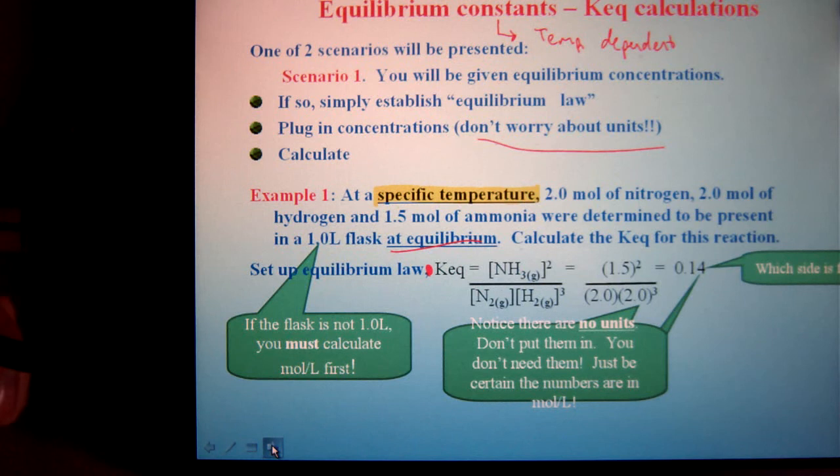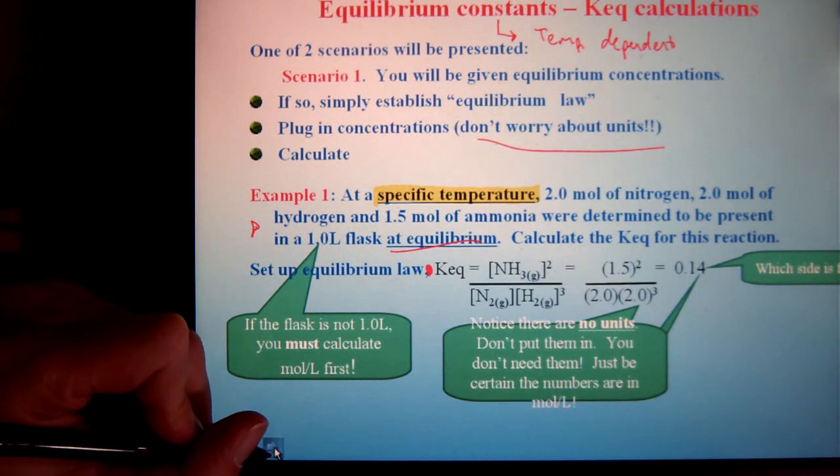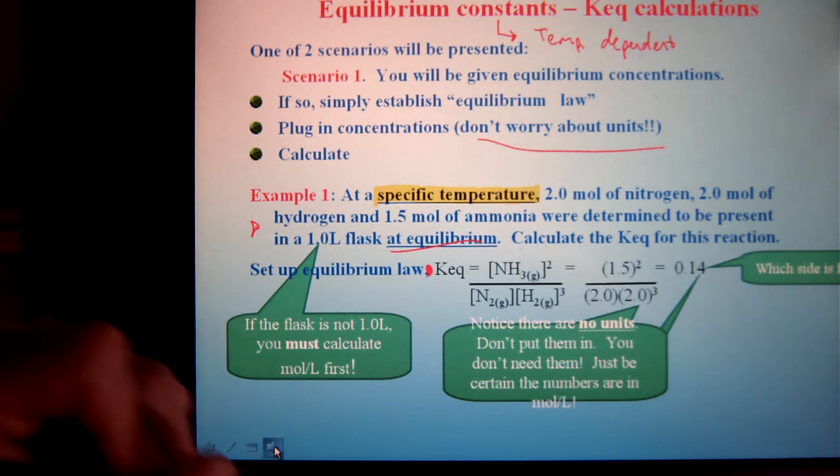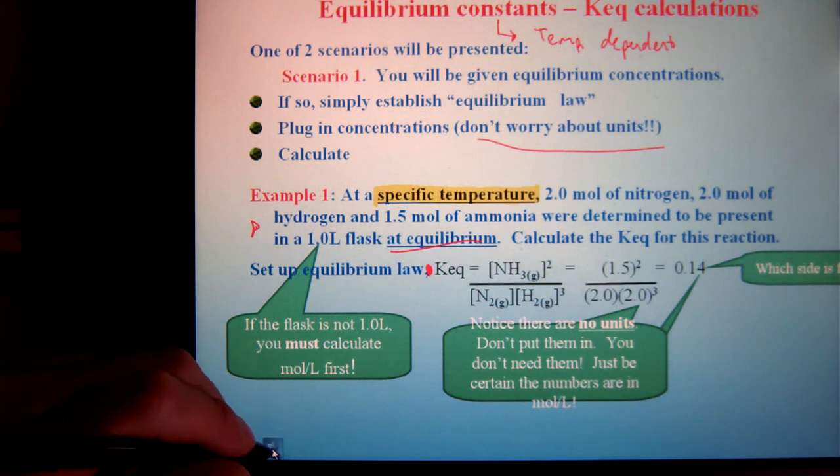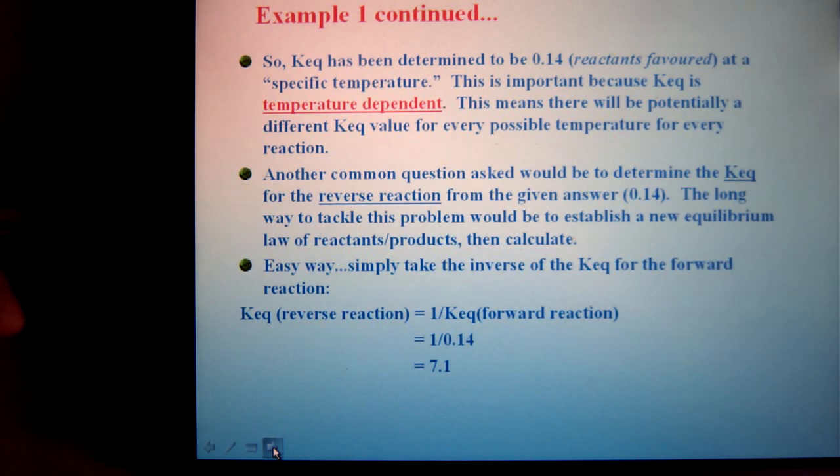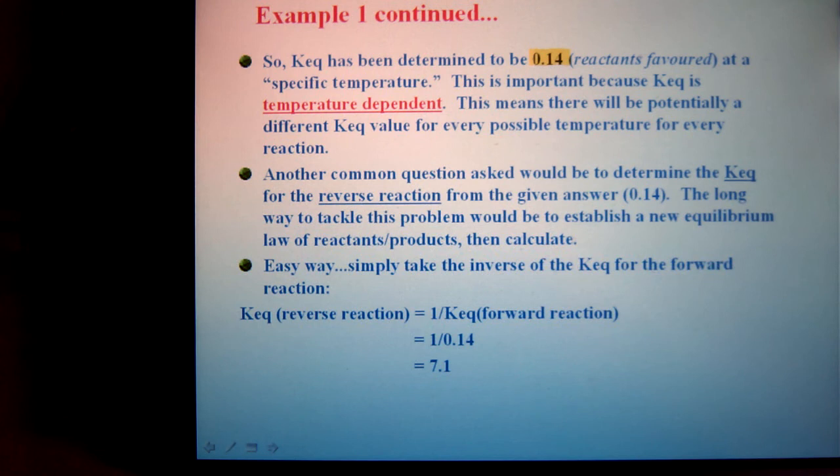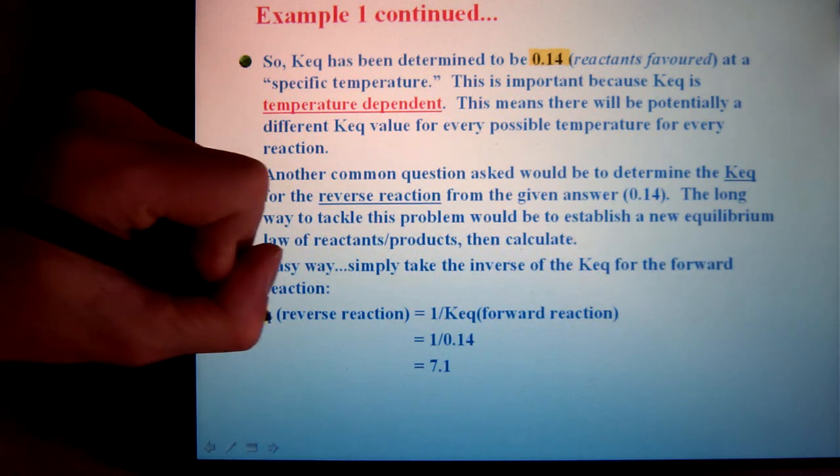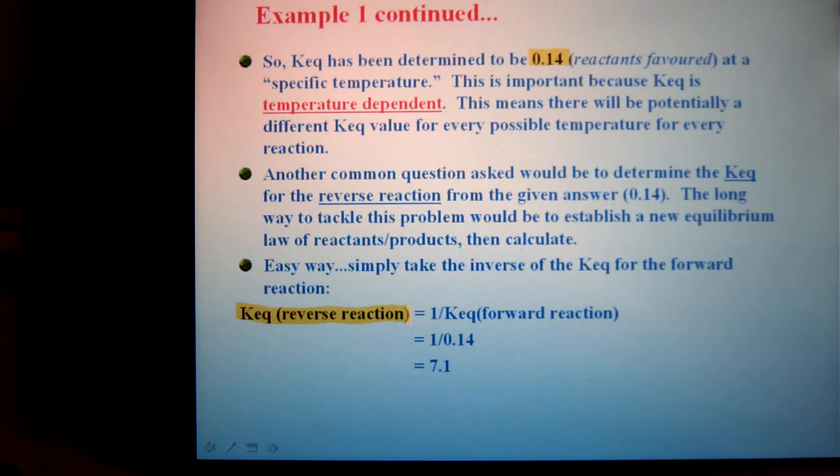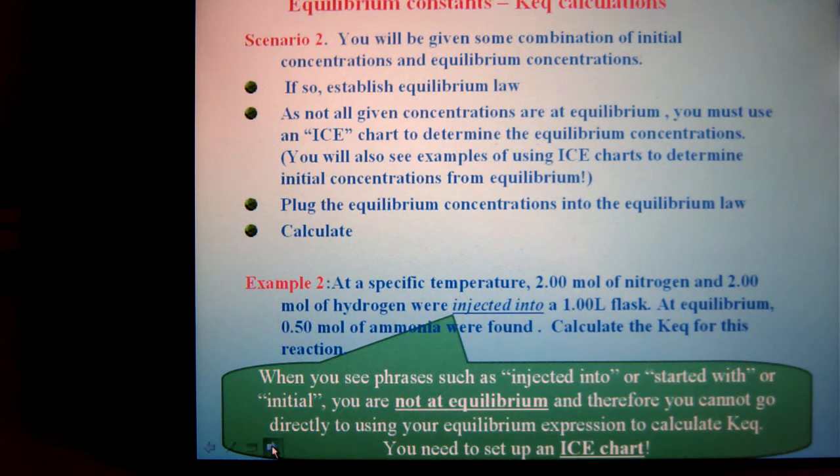So most of our examples are going to be like this, where you're already at equilibrium, and you just have to plug in your numbers and solve. Either you're going to be given equilibrium concentrations like you are here and solve for K, or you'll be given K and have to rearrange and solve for equilibrium concentration. Sometimes you'll be given a reaction and its K-value. In this case, we're saying Keq has been determined to be 0.14. So that's all we know. So, the question might be, solve for the K of the reverse reaction. Well, to get the K of the reverse reaction, it's simply calculated the inverse, the reciprocal. You just state 1 divided by the forward reaction, gives you the K-value of the reverse.